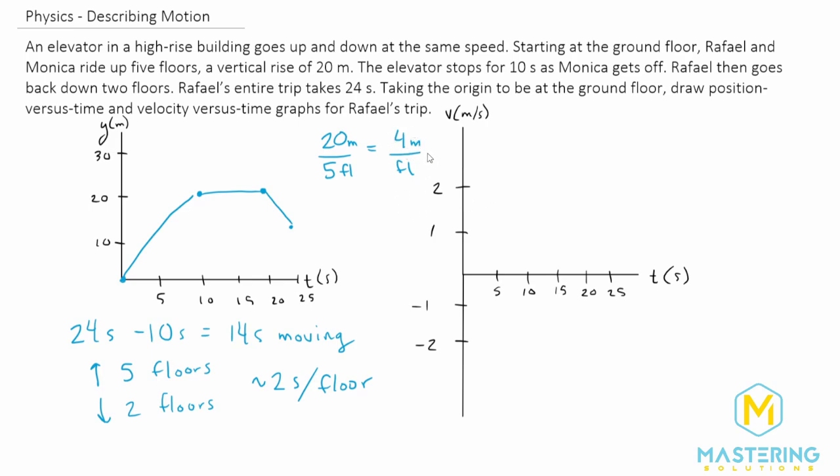So we figured out that each floor is four meters, and it takes about two seconds per floor. So if we have our velocity is equal to a change in distance over a change in time, we have four meters per floor divided by two seconds per floor gives us two meters per second.